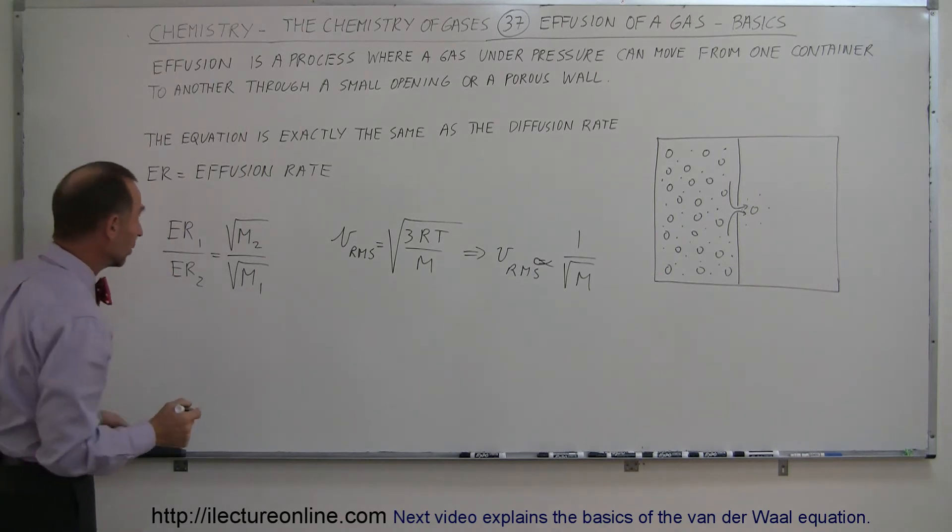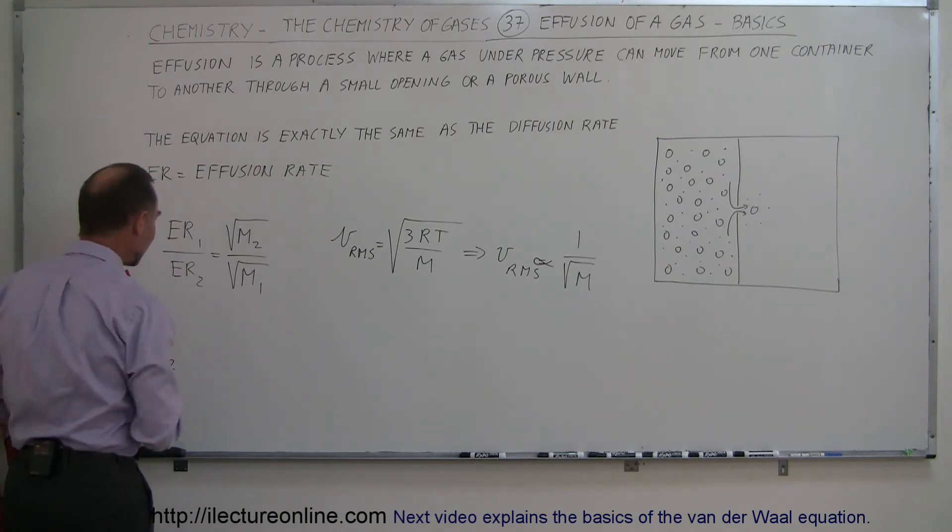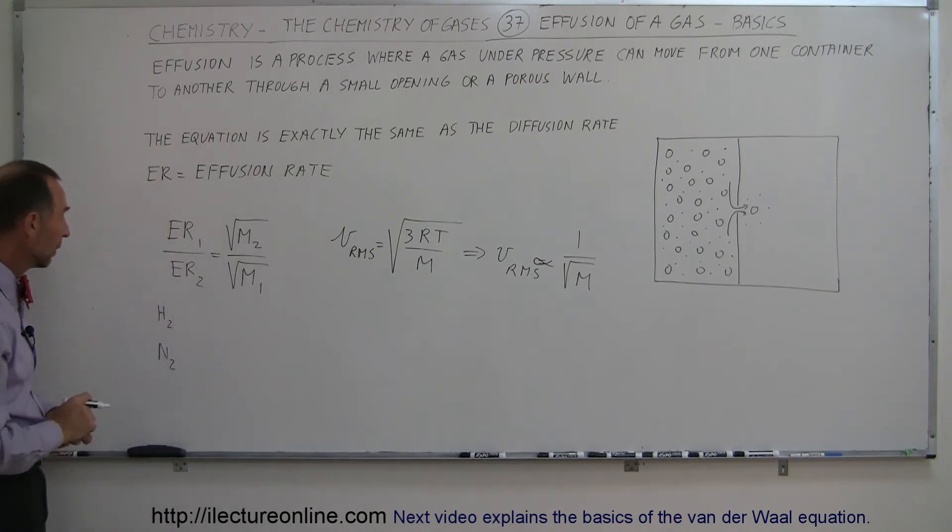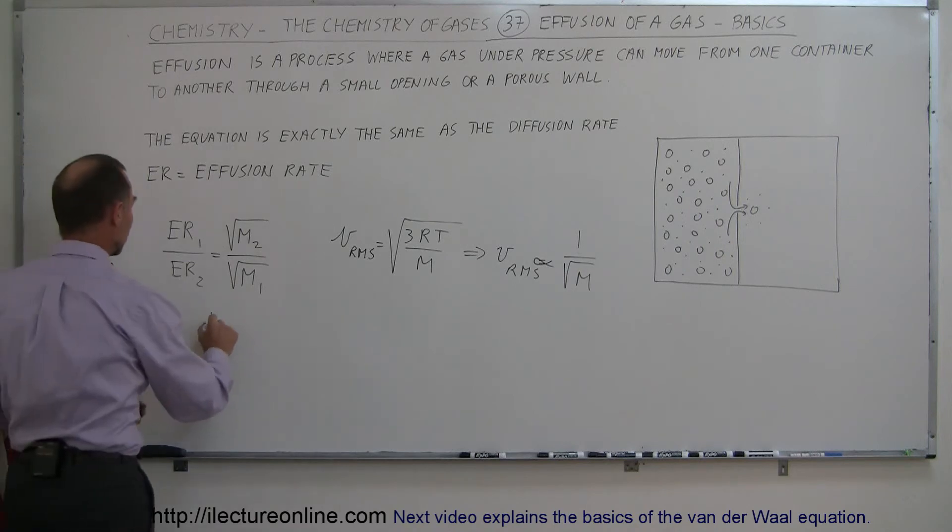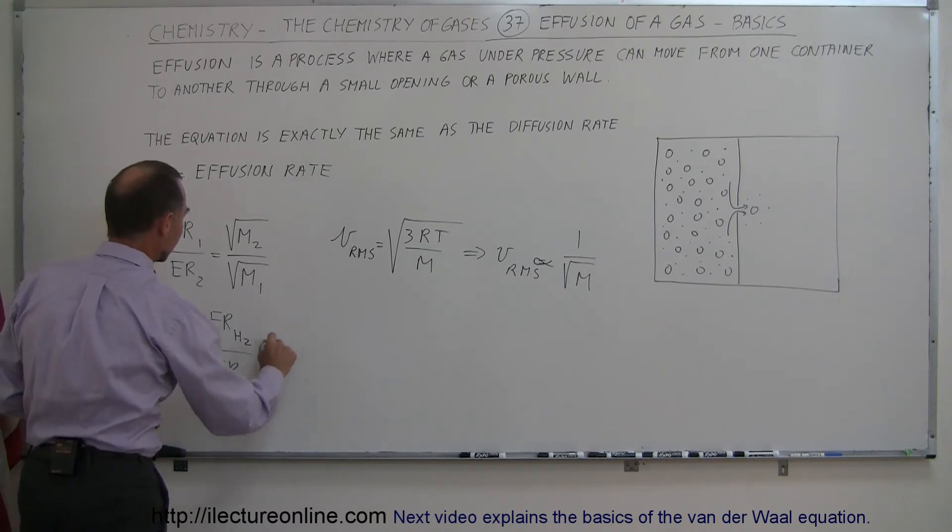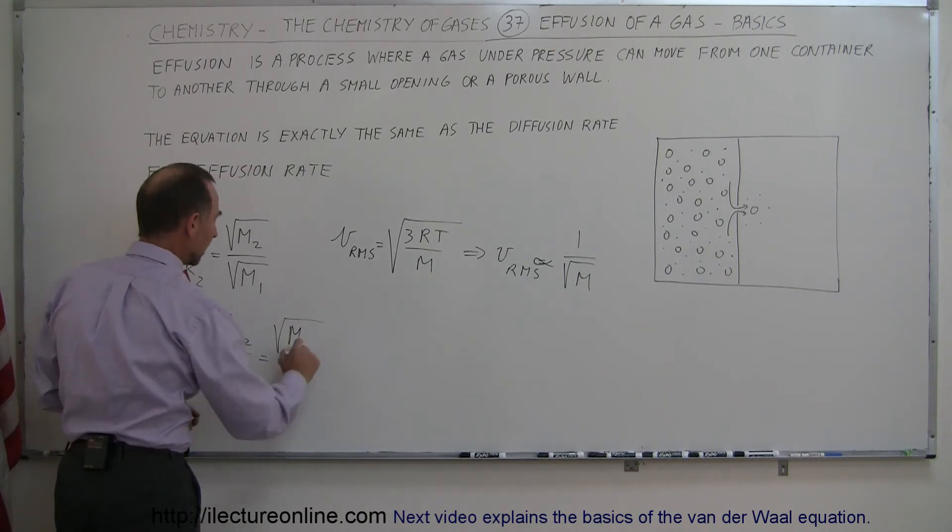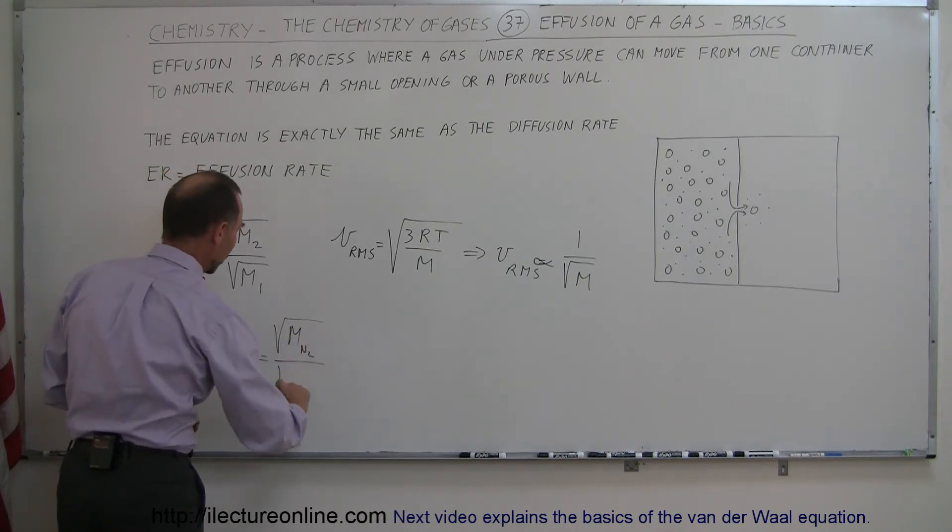So if we do another example, let's say we have the hydrogen molecule and we have the nitrogen molecule. What are the effusion rates of one compared to the other? So the effusion rate of the hydrogen molecule divided by the effusion rate of the nitrogen molecule is equal to the square root of the molar mass of the nitrogen molecule divided by the molar mass of the hydrogen molecule.